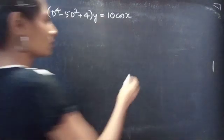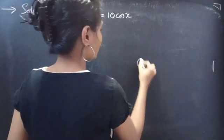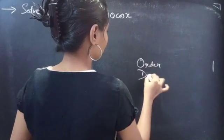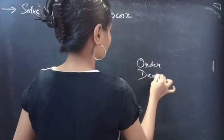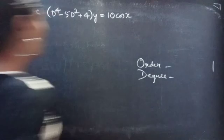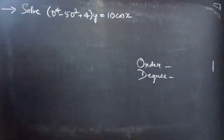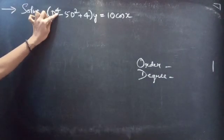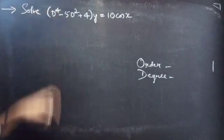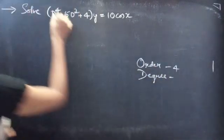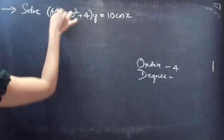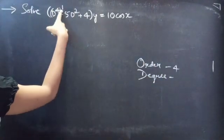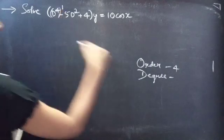Firstly, let's find the order and degree of the given differential equation. Identify the highest derivative. Here, D⁴ is the highest derivative, so the order will be 4. The highest power of the highest derivative is our degree.